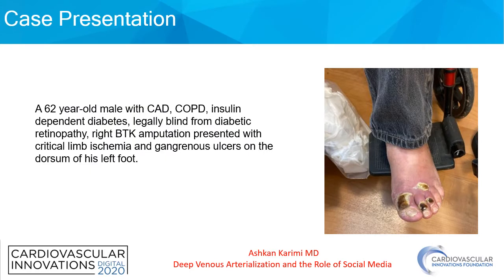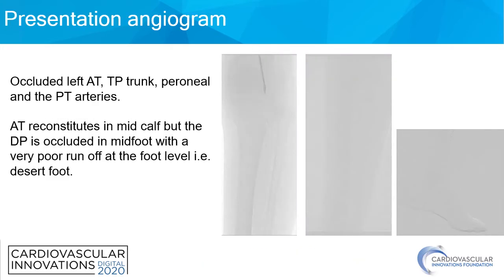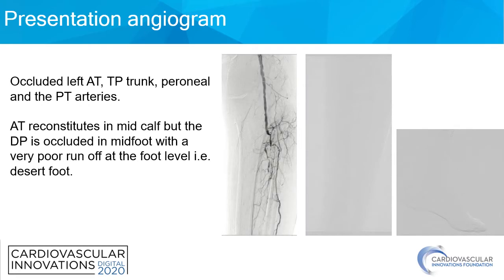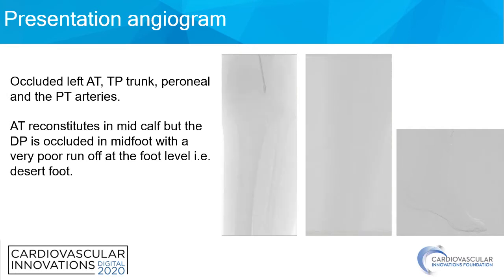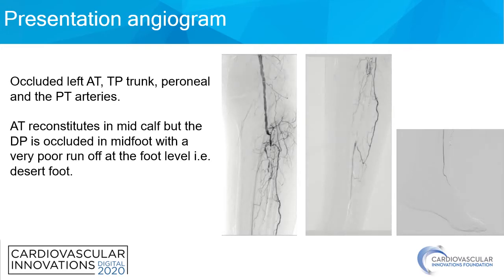Our patient is a 62-year-old male with history of CAD, COPD, insulin-dependent diabetes, legally blind from diabetic retinopathy, has already had a right BTK amputation, and presented with critical limb ischemia and gangrene ulcers on the dorsum of his left foot. On presentation angiogram, AT is occluded, TP trunk is occluded, peroneal and PD arteries are also occluded. AT reconstitutes in mid-calf but the DP is occluded in the forefoot with very poor runoff at the foot level and essentially a desert foot.